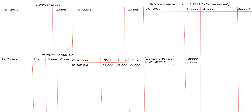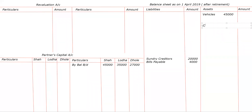Going to the asset side. First, vehicle — any adjustment on vehicles? Yes, in the inner column 45,000. After vehicles, next is computers. How much? Forty-three thousand.